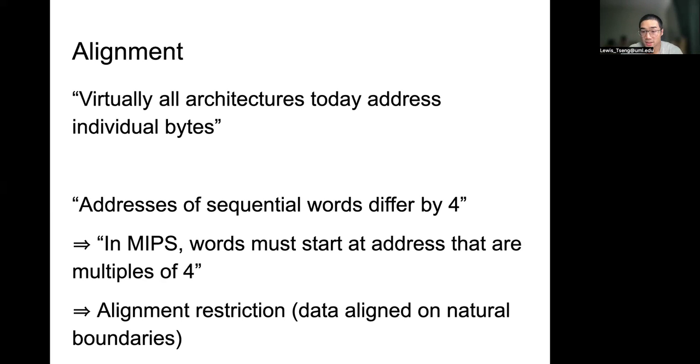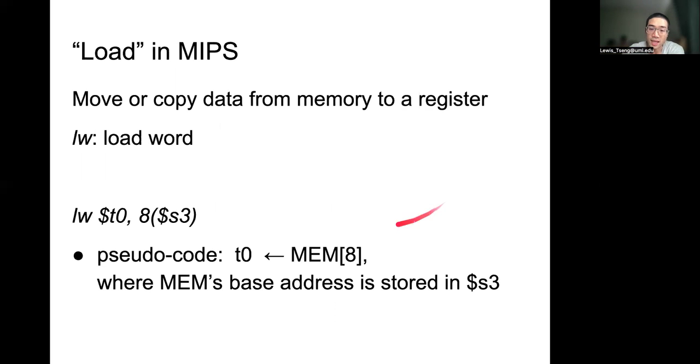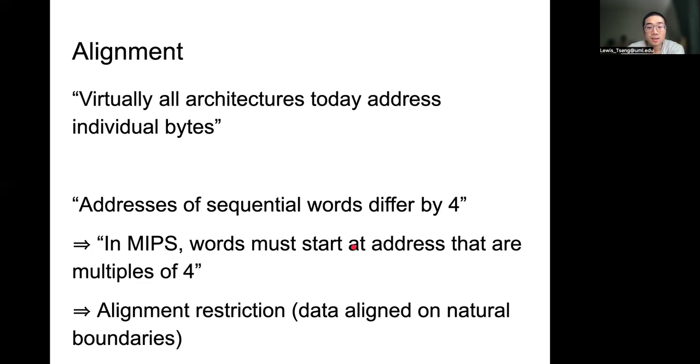That implies in MIPS, when you think about the words, when you think about data inside the memory, you must start at an address that are multiples of four. If you go back here, eight is a multiple of four. Alignment restriction means that the data must align on the natural boundary of your array. The data cannot be stored across the boundary.